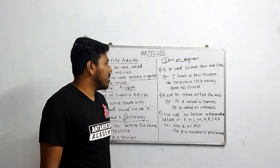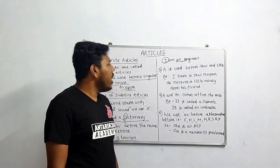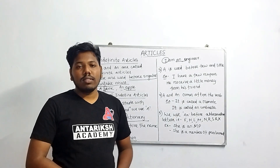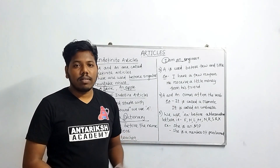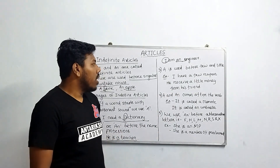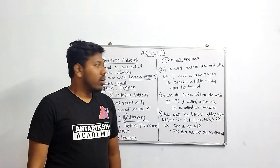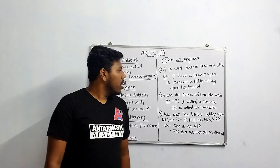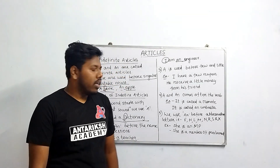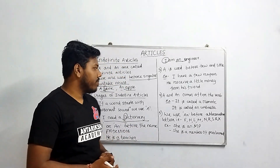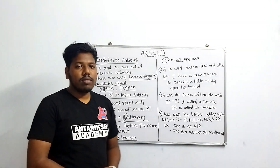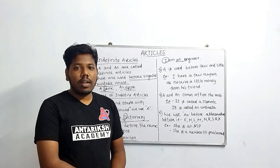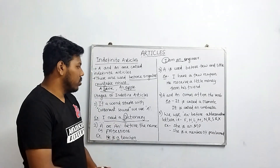The third use is: 'a' is used before 'few' and 'little'. For example: 'I have a few rupees' and 'He received a little money from his friend.' Note down these examples so you can know where 'a' and 'an' are used.